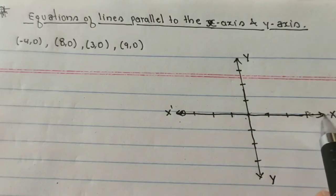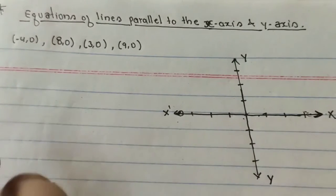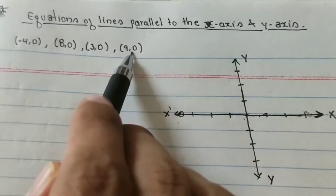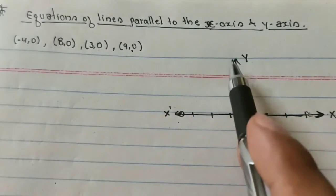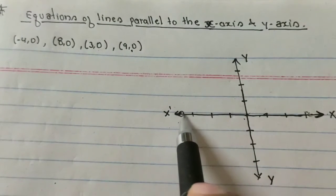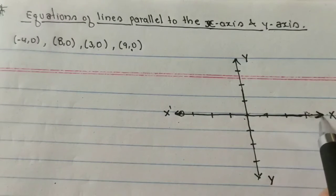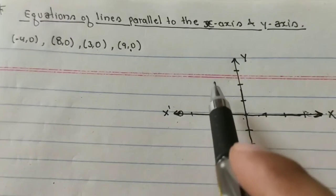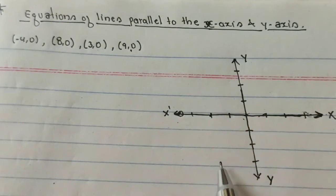These are all points getting on the x-axis line because y is 0 for all points. That's why my line is getting on x-axis, and this line getting on x-axis will be parallel to y-axis.